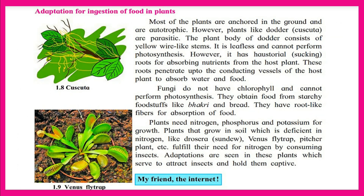Adaptation for ingestion of food in plants: most plants are anchored in the ground and are autotrophic. However, plants like Cuscuta are parasitic. The plant body of Cuscuta consists of yellow wire-like stems; it is leafless and cannot perform photosynthesis. It has haustorial sucking roots for absorbing nutrients from the host plant. These roots penetrate up to the conducting vessels of the host plant to absorb water and food.